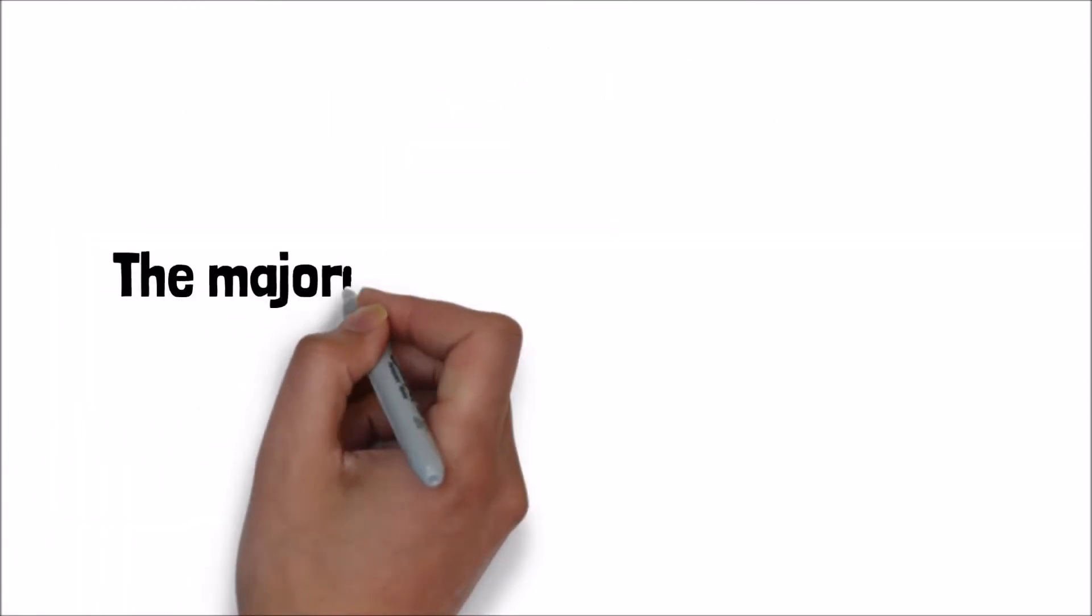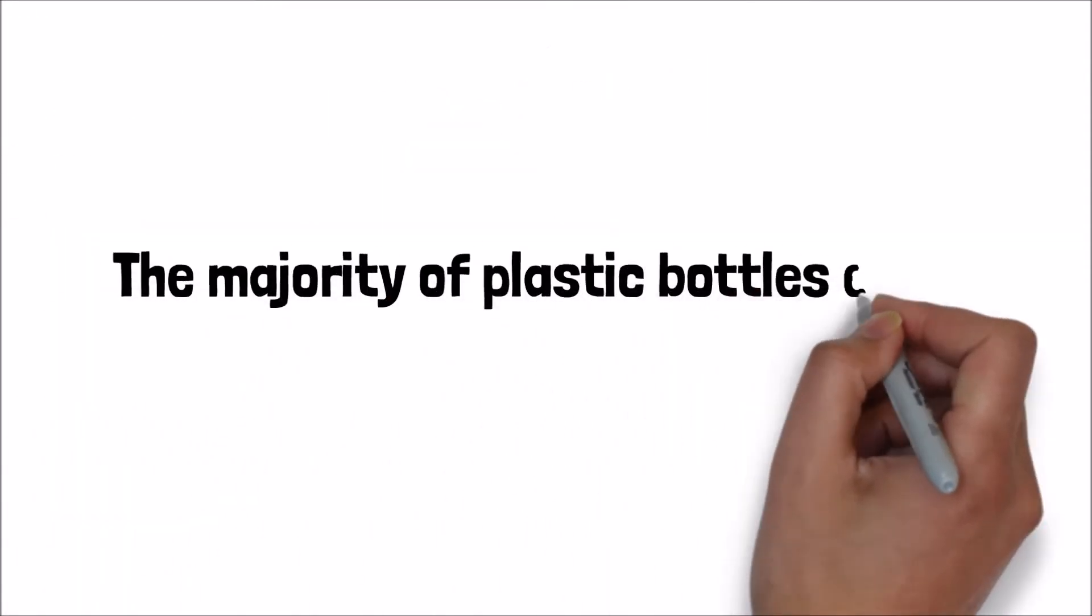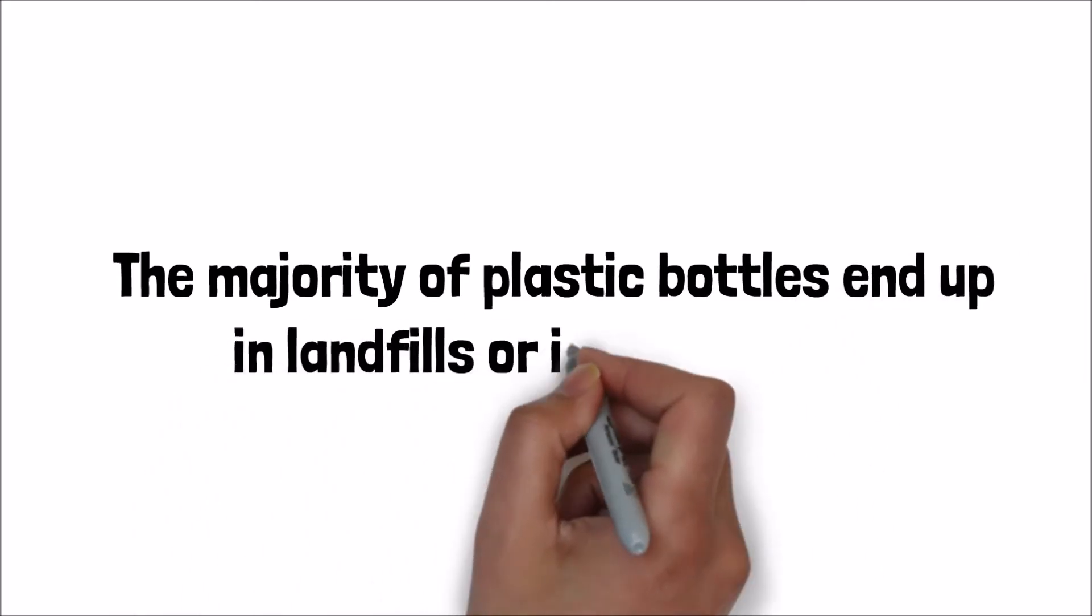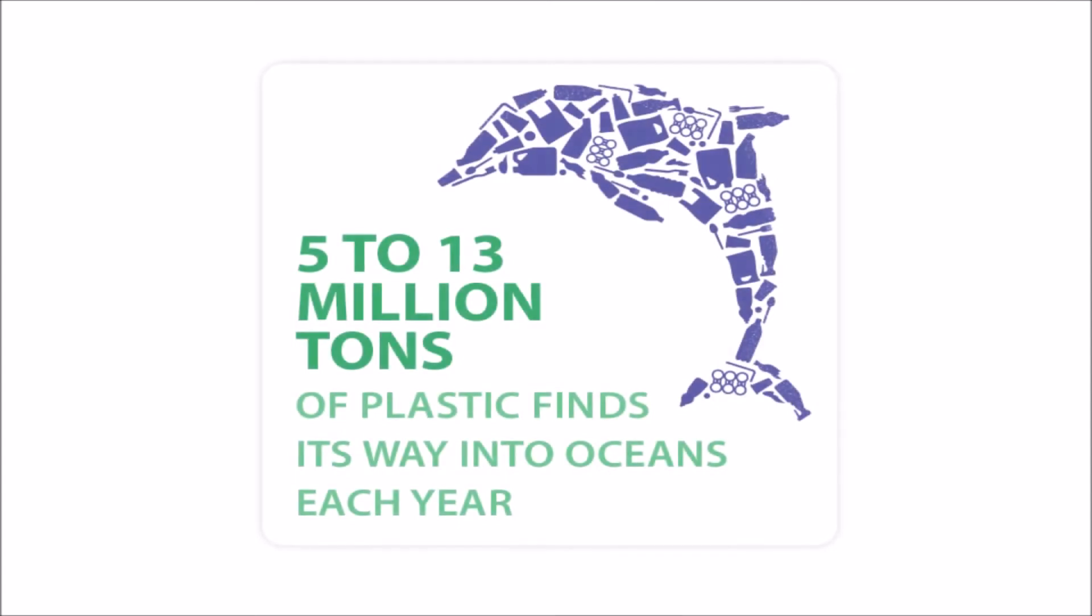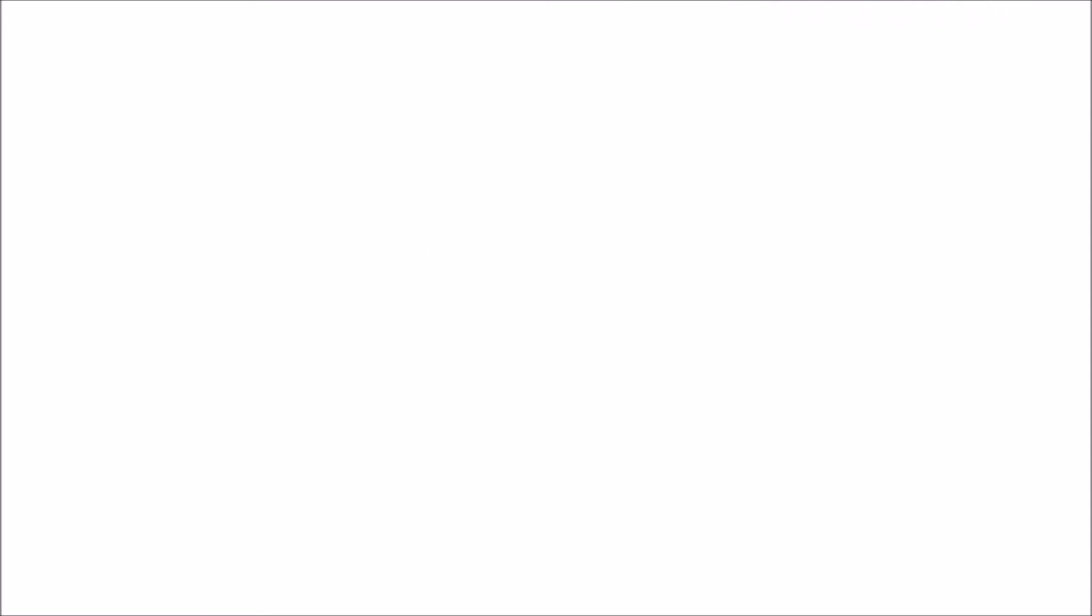According to research done by Ellen MacArthur Foundation, somewhere between 5 to 13 million tons of plastic finds its way into our oceans each year. After these plastic bottles break down, seabirds, fish, and other organisms eat them.